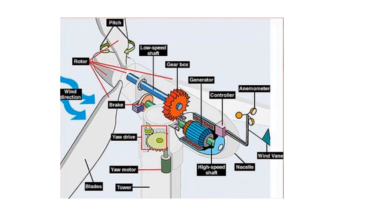Here in the picture we can see the different important components housed in a nacelle. We can see the positions of the anemometer, high speed shaft, controller, generator, gearbox, low speed shaft, brakes, yaw drive, yaw motor housed inside the tower, positioning of the blades, rotor, and pitch controller.